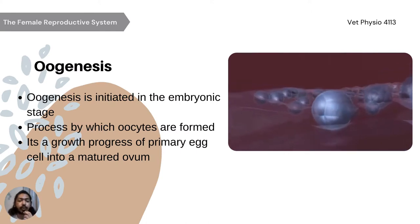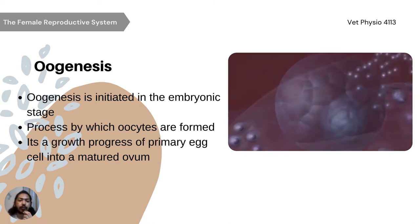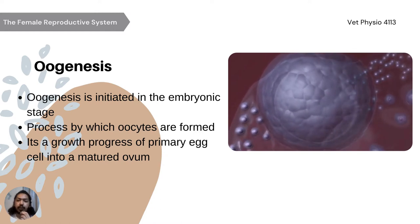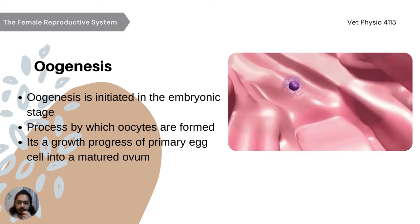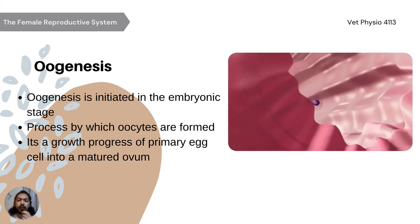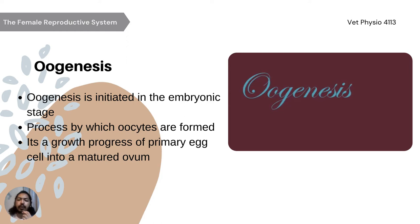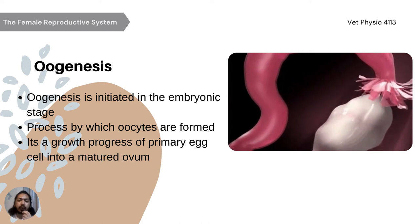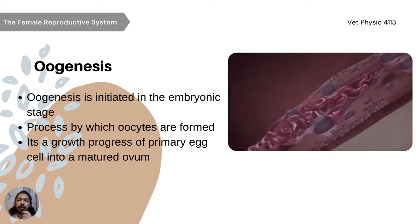Oogenesis is initiated in the embryonic stage. It is a process by which oocytes are formed — the growth progression of a primary egg cell into a matured ovum. The oocyte of a primordial follicle is in a quiescent stage of meiosis. Meiosis resumes at the time of ovulation. Only one oocyte develops from the reduction of the primary oocyte. A polar body that lacks sufficient cytoplasmic material for viability develops when the secondary oocyte is formed. This surviving oocyte has a haploid number of chromosomes.